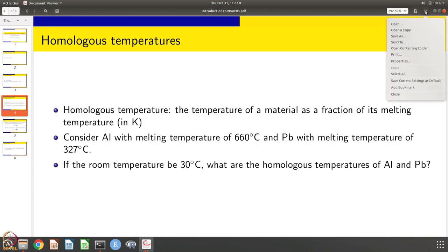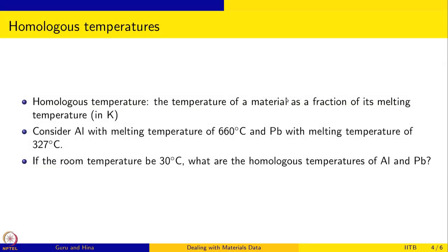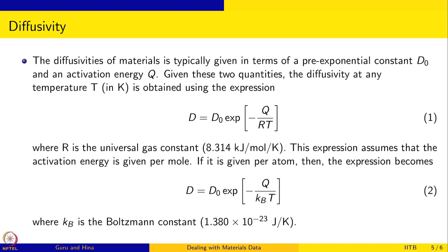The second problem is on diffusivity. Diffusivity of materials is typically given in terms of the pre-exponential constant D naught and the activation energy Q. At any temperature in Kelvin, the diffusivity is D naught times exponential of minus Q divided by RT, where R is the universal gas constant 8.314 joule per mole per Kelvin. If Q is given per atom instead of per mole, you use K_B T where K_B is the Boltzmann constant. Typically D naught and Q are tabulated and you calculate diffusivity for any temperature.